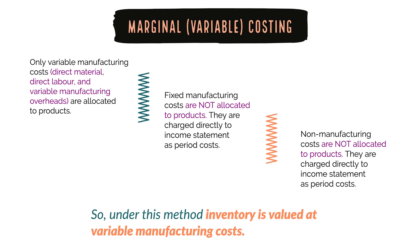This mainly comprises of direct material costs, direct labor costs and any variable manufacturing overheads. Fixed manufacturing costs are not included as part of product costs in marginal costing. And also non-manufacturing costs such as selling, distribution, advertising, marketing and so on are also not included to calculate product costs.